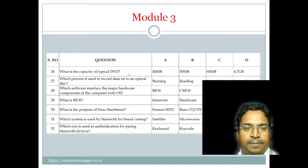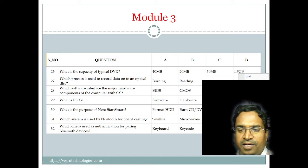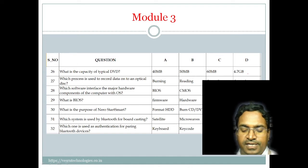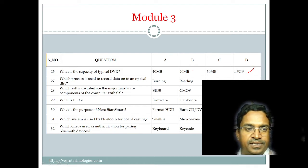What is the capacity of a typical DVD? The right answer is 4.7 GB. 4.7 GB is the capacity of a DVD.